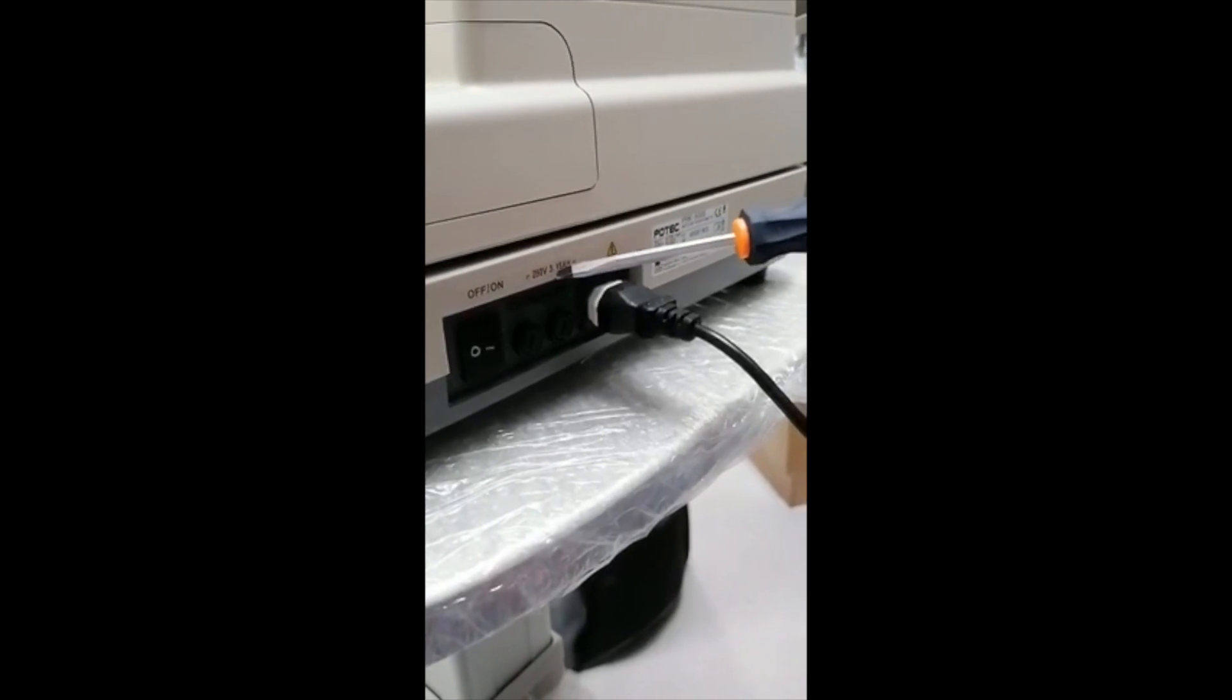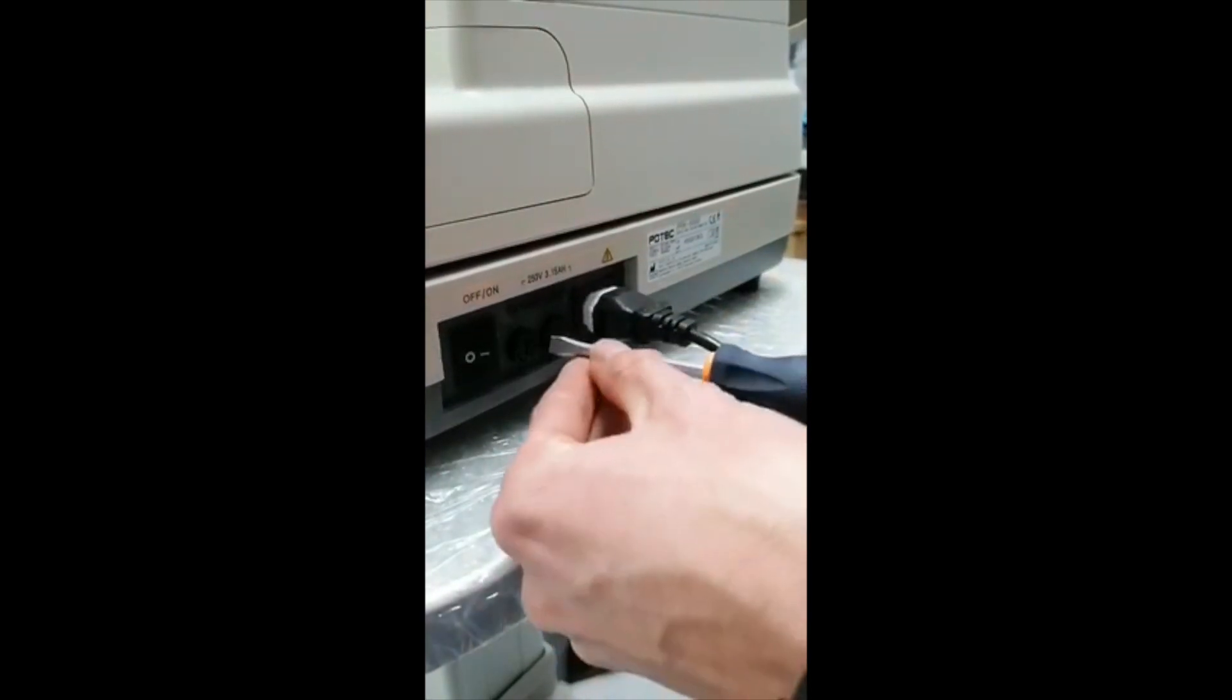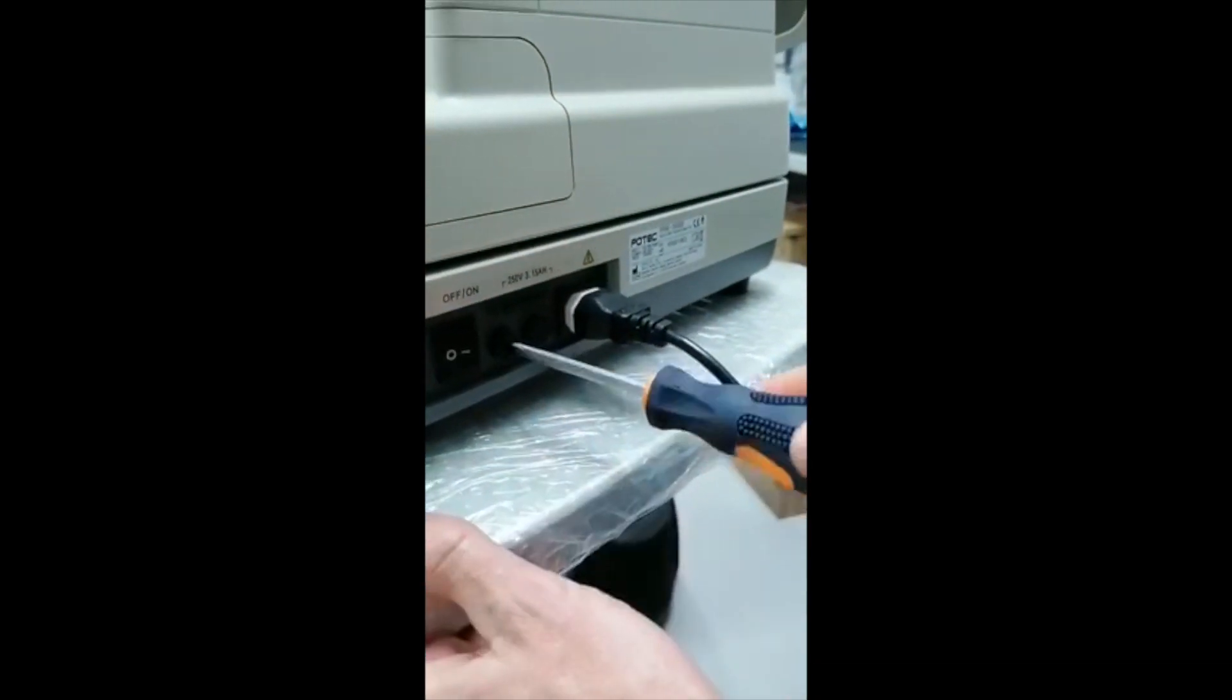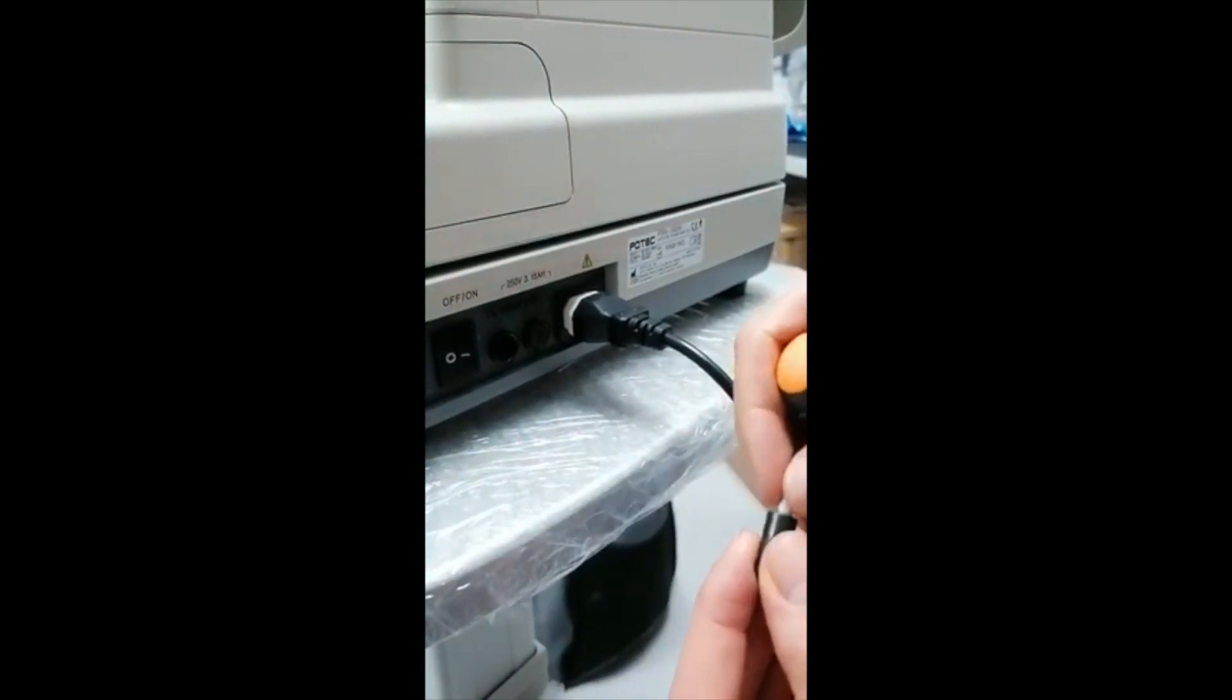Please make a note of the amperage of the fuses. It's 3.15 amp hours, it is here and over here as well. Just remove the fuse like this, press and turn. Pulls out easily.